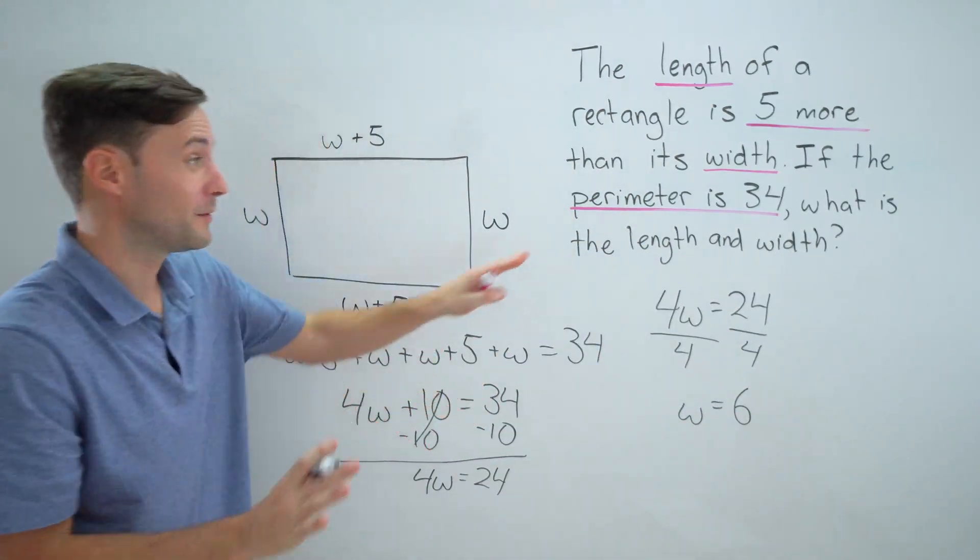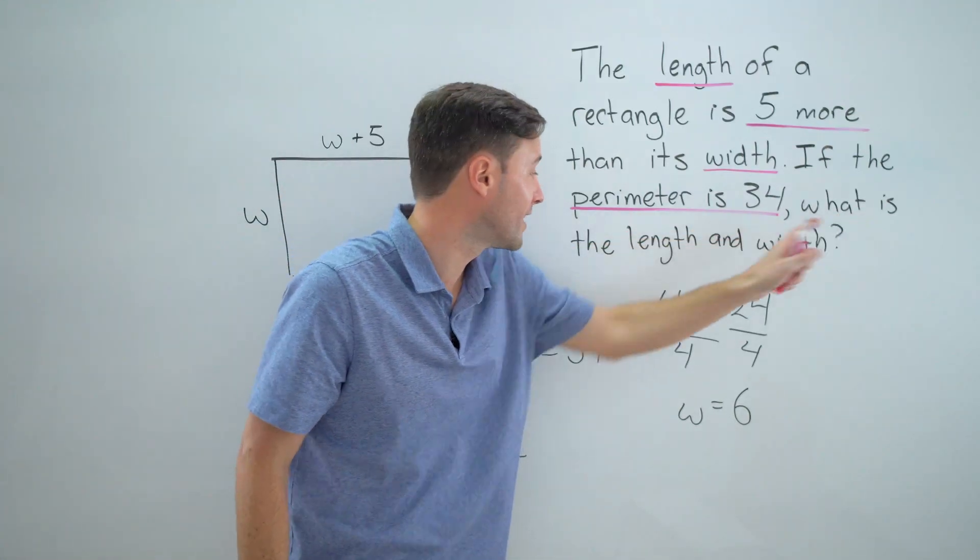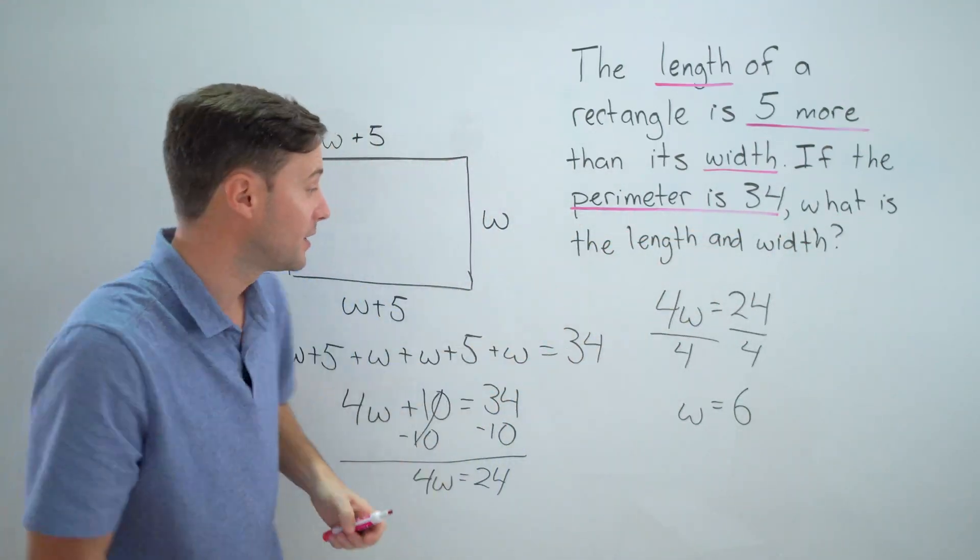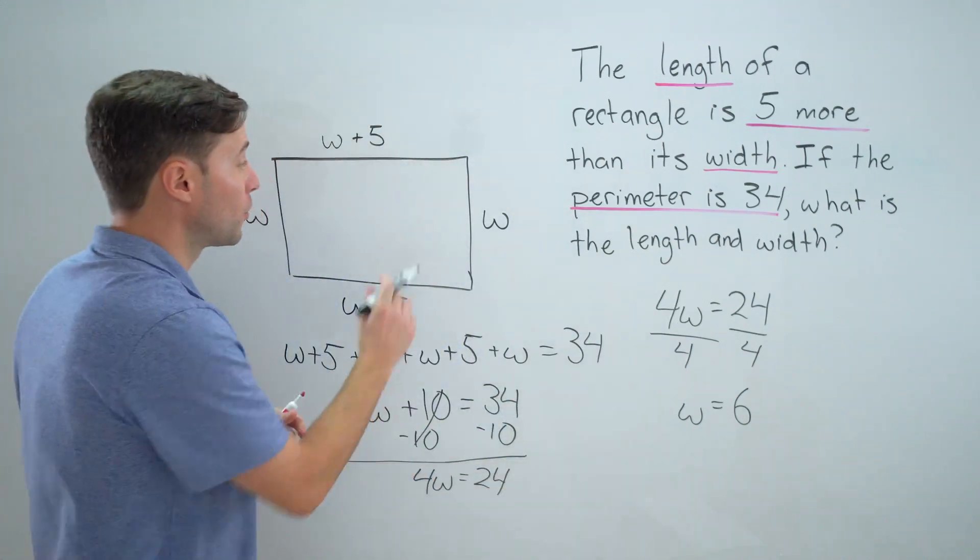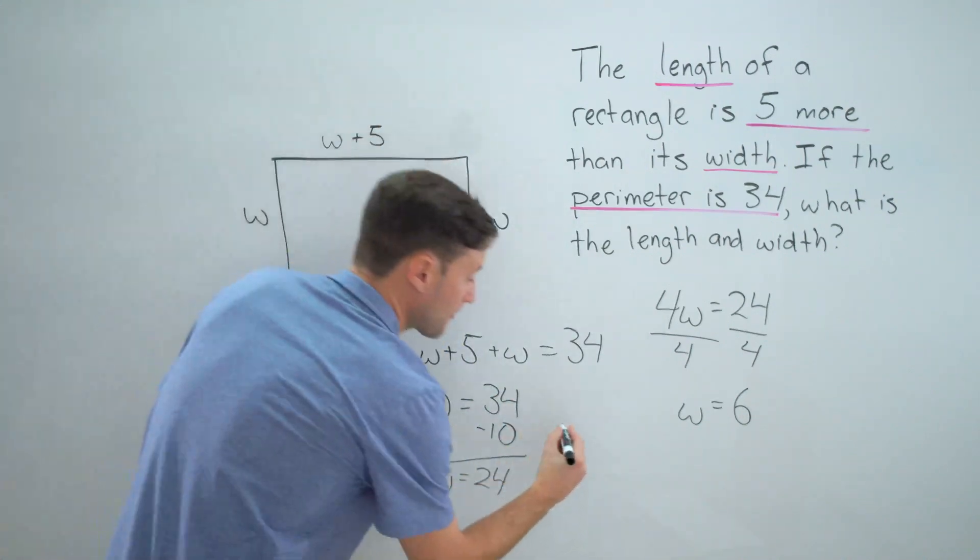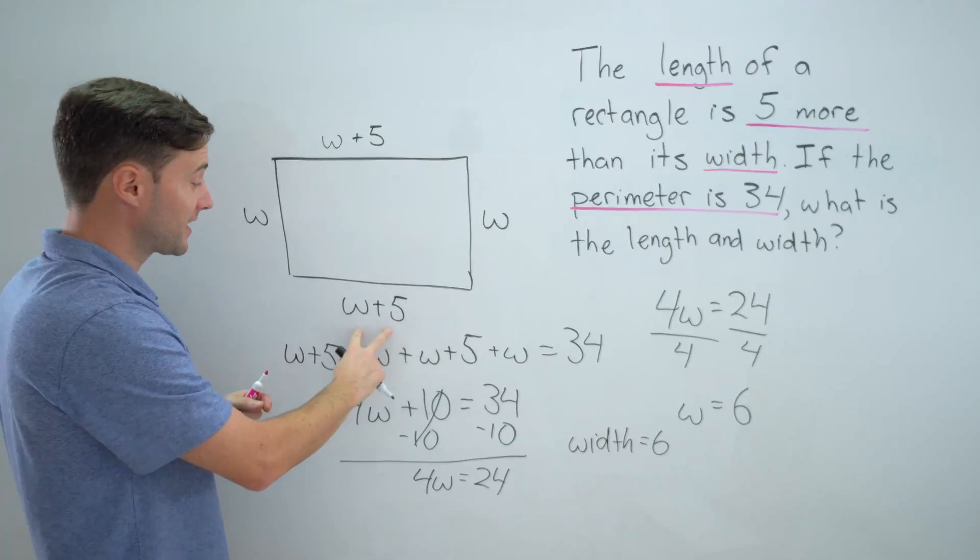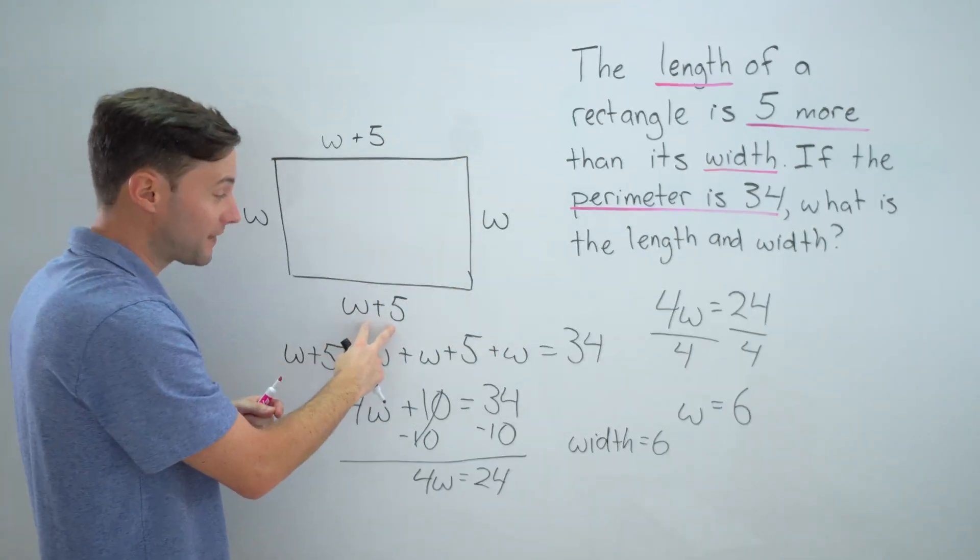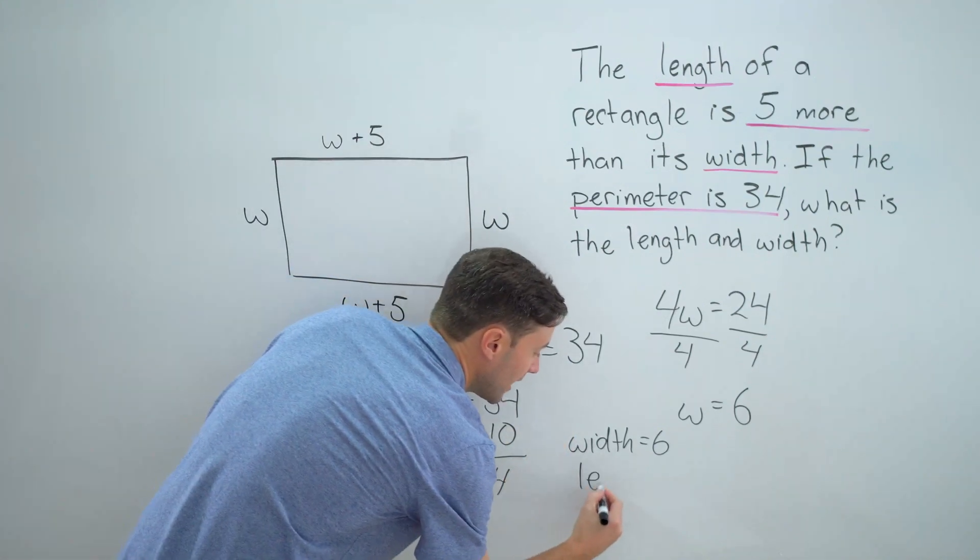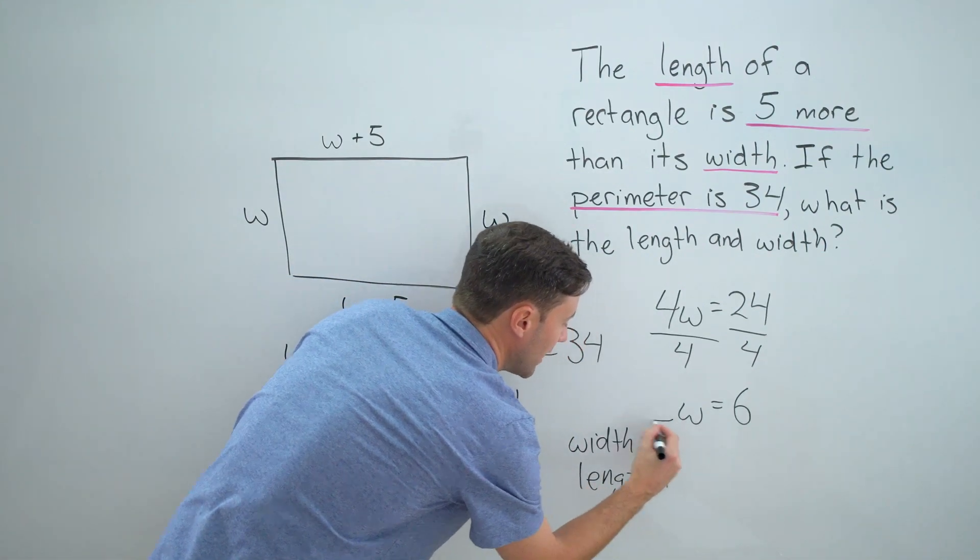I'm not finished yet though. Always read the question: what is the length and width? Well, if the width w is 6, the width is easy—it's 6. And if w is 6, the length is five more, so 6 plus 5, that means the length equals 11.